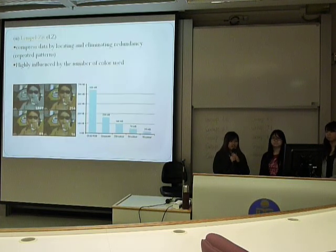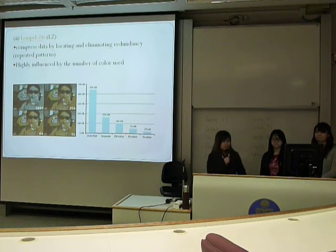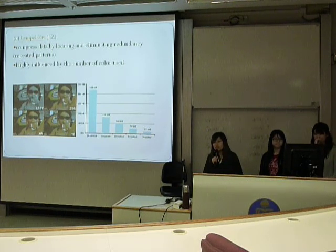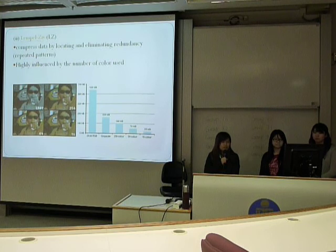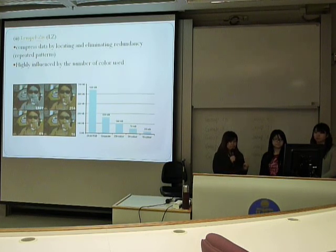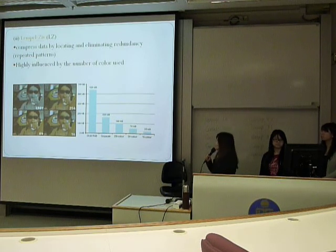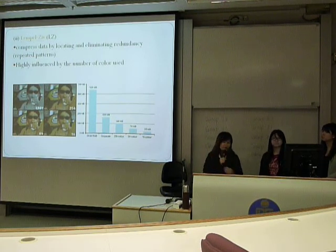The second type is LC compression. This compression is mainly highly influenced by the number of colors used, which means that if the image is more colorful, we need to use more bits to represent it. If a colorful image is represented by smaller bits, the color properties and the image quality will be lower, and you can see that in the PowerPoint.